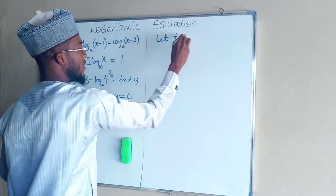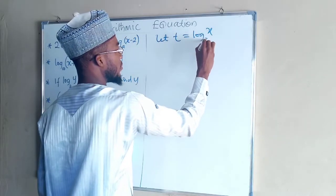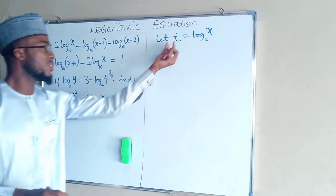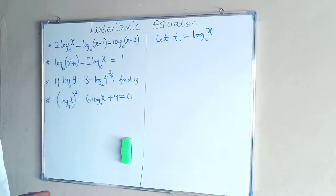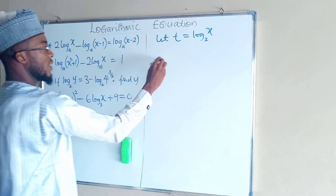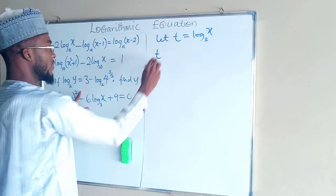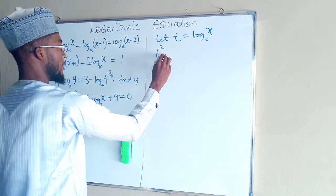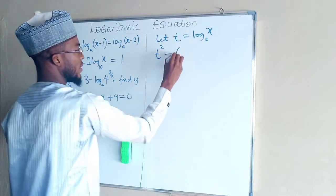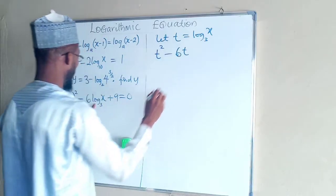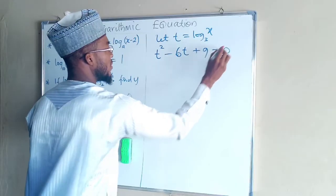Let t equals log x base 3. So therefore we solve it using t as log x base 3. So here we have t raised to the power of 2 minus this is 6t, then plus 9. This will give us 0.